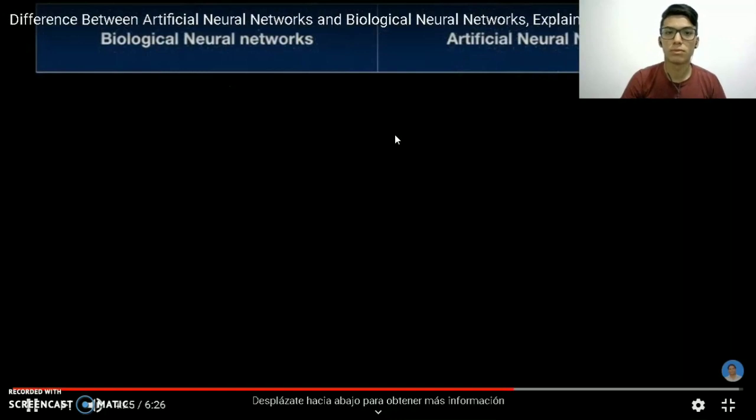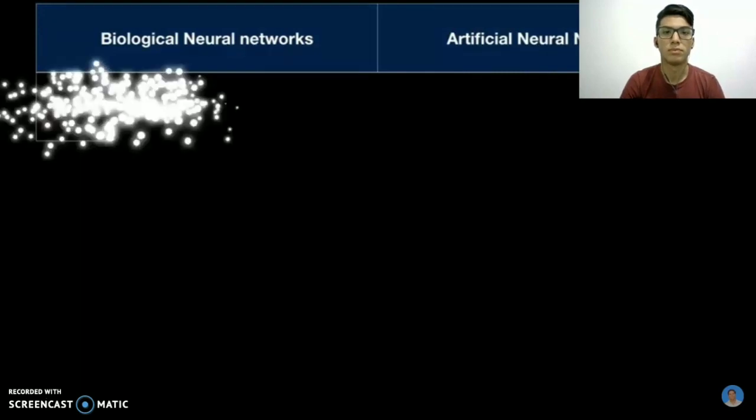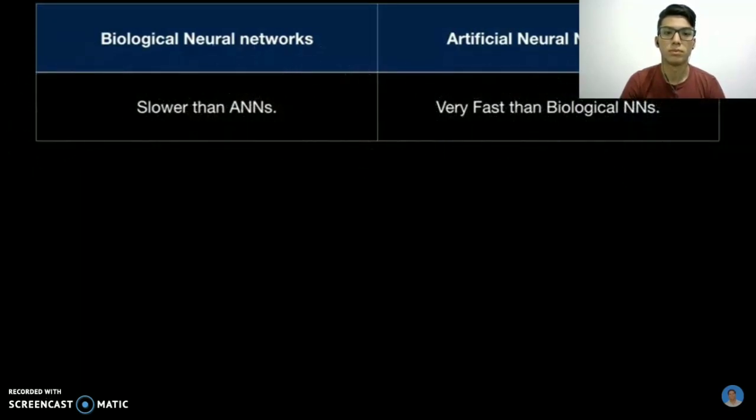Now we will see, in brief, the basic difference between biological neural networks and artificial neural networks. The first one is that biological neural networks are slower than artificial neural networks. This is because biological neural networks include chemicals like neurotransmitters, whereas artificial neural networks work completely on electrical signals. Hence, the time of artificial neural networks to work is in nanoseconds.